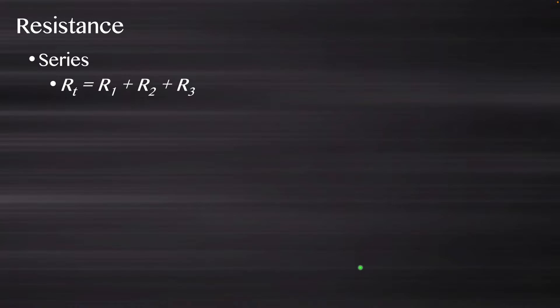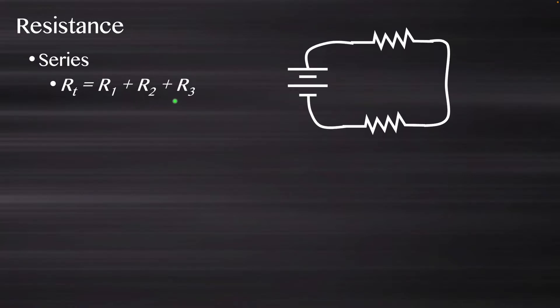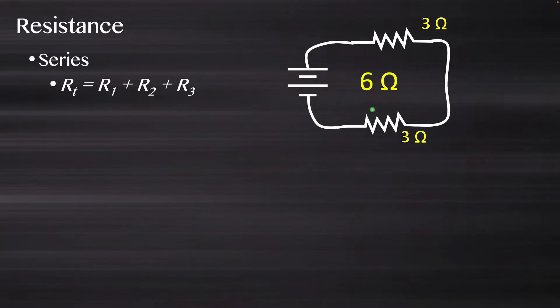Next, let's take a look at resistance. For resistance, the formula is similar to voltage when in series: resistance total is R1 plus R2 plus R3 — you just add up however many you have. So with two resistors, each having three ohms of resistance, I add three plus three, and the circuit has six ohms of resistance.